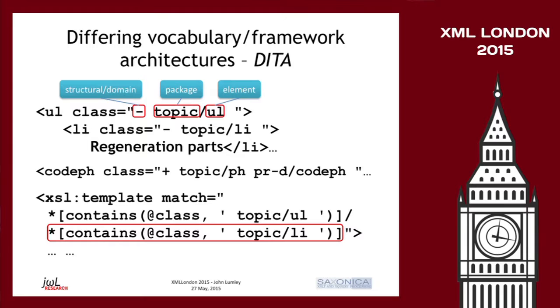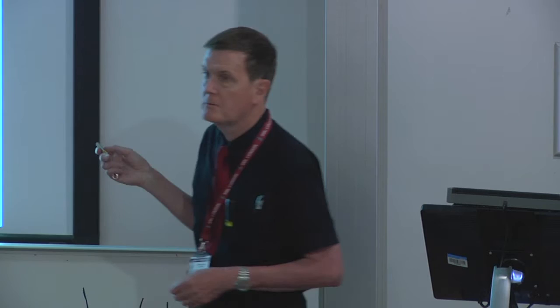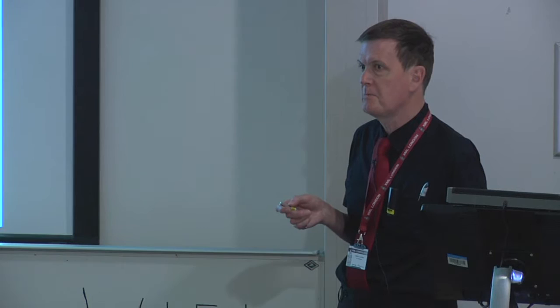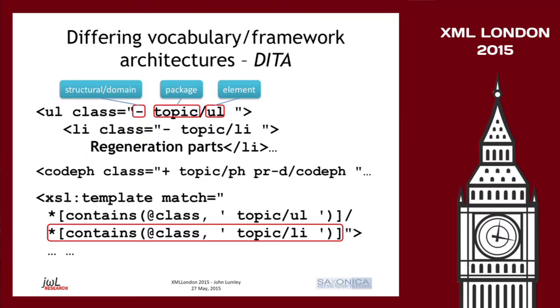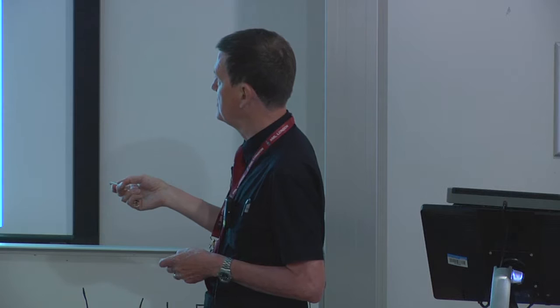The real meaning in DITA is loaded on the class attributes — it's a series of tokens giving meaning. For example, here is a code phrase, which is a phrase in the topic domain and a code phrase in the programming domain. The consequence is that the defining framework for processing this — DITA OT — actually contains templates that look like this. It's actually from XSLT 1, mostly, because there's no tokenized function, so it uses a space-tag-space pattern to deal with it, making sure things have spaces on the front and back. And so we're into a situation where this is going to be effectively expensive.